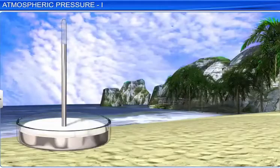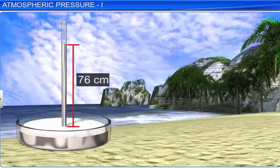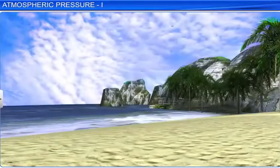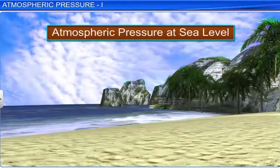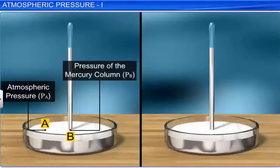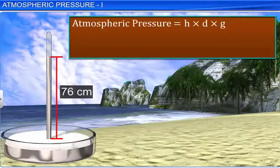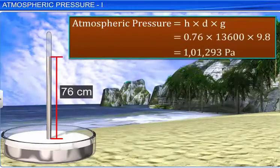The atmospheric pressure at sea level is 76 cm of mercury. The SI unit for atmospheric pressure is Pascal. The atmospheric pressure equals the pressure exerted by a mercury column of height H — the product of the height of the mercury column, the density of mercury, and the acceleration due to gravity. This is equal to 1.013 × 10⁵ pascal.